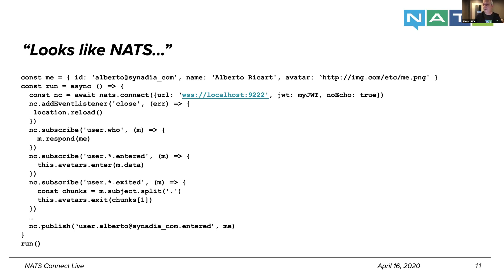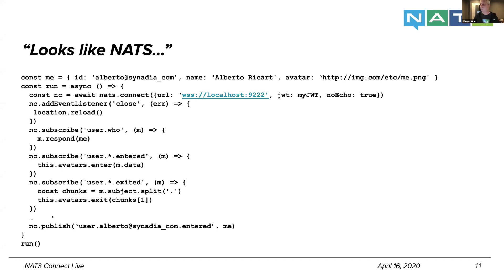The client also subscribes to user.star.entered, where the star is replaced by the user ID, so whenever a new browser enters the application this browser becomes aware and can render that. There's also a subscription to the exit event so it can know when clients go away and update itself. Finally, just before waiting passively for input, the client publishes an event saying it has entered, which aggregates this browser to other clients out there.